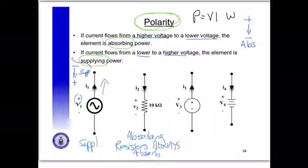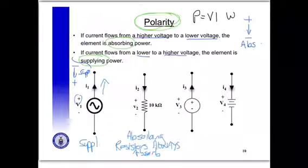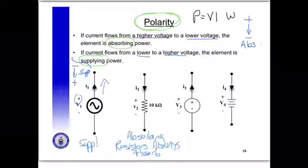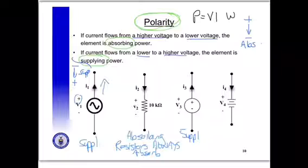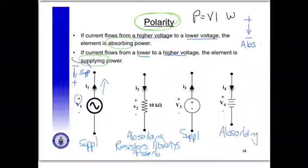In the next example, the higher voltage is here and the lower voltage is here. The current is flowing from the higher voltage, so this element is supplying power. In the last example, the higher voltage is here and the lower voltage is here, and the current is flowing from the higher voltage to the lower voltage, so this element is absorbing power. In practice, that means it is a battery which is charging.